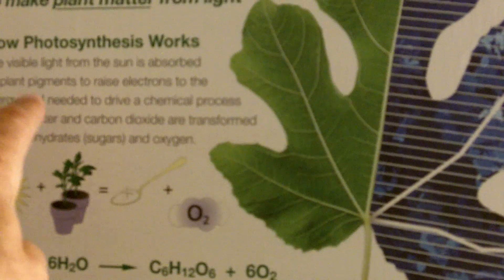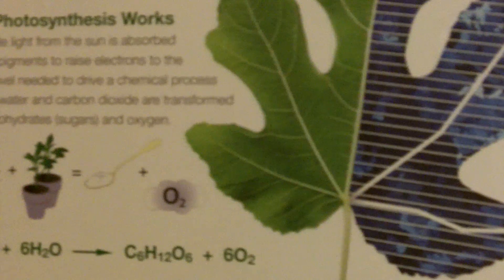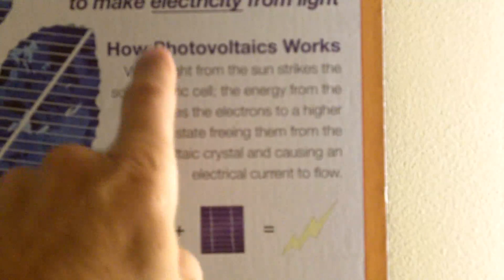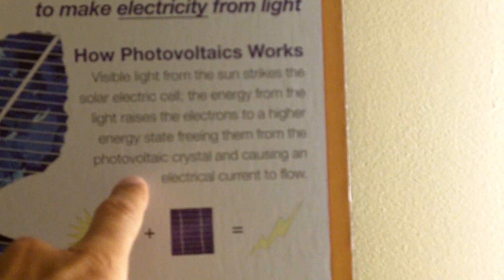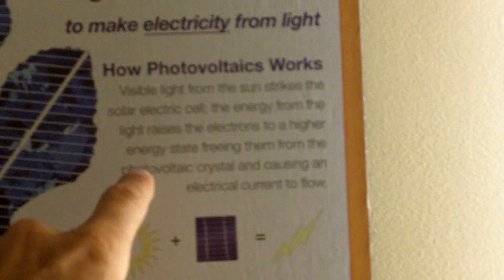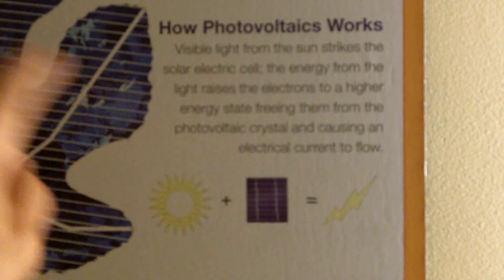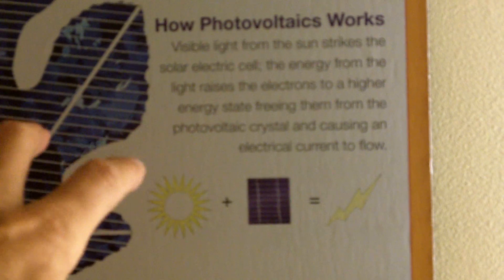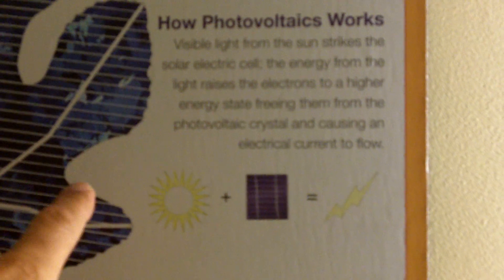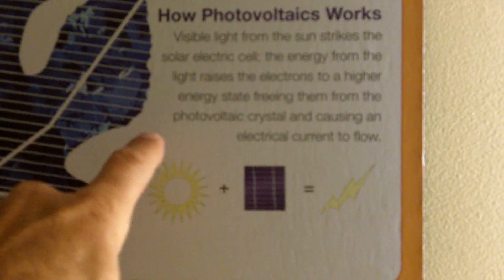In photosynthesis, the visible light from the sun is absorbed by plant pigments, and it raises the electrons to an energy level needed to drive the process. Whereas man's imitation is taking visible light from the sun, striking the solar electric cell — the energy from that light agitates or raises the electrons to a higher energy level.